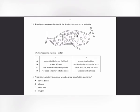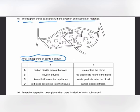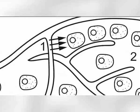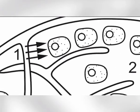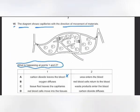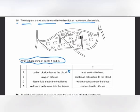MCQ number 15: the diagram shows capillaries with the direction of movement of materials. At point 1, substances leave the blood into the tissues. Carbon dioxide never leaves the blood — it enters the blood from tissues. Oxygen can diffuse from the blood to the tissues, and tissue fluid can also leave the capillary at point 1. Red blood cells never leave the blood.